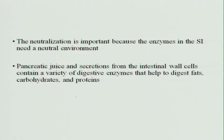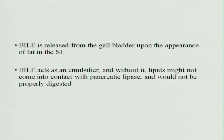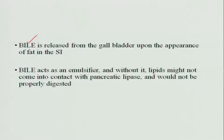Pancreatic juices and the secretions from the intestinal wall contain a variety of digestive enzymes which help to digest fat, carbohydrates, and proteins. Bile is released from the gallbladder upon the appearance of fat in the small intestine. If the food is fatty, bile is released and acts as an emulsifier; without it, the lipid will not come into contact with the pancreatic lipase, which is the enzyme that digests fat.